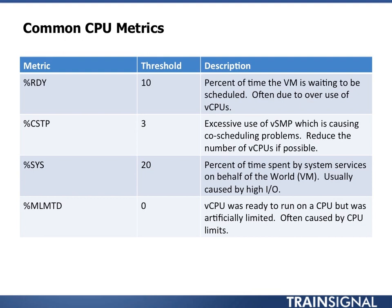The last CPU metric is Percent MLMTD — the vCPU was ready to run but was artificially limited by a CPU limit. I really want to see this at zero. Use CPU limits sparingly, and if you see this above zero, it usually means you've got a limit that someone forgot about. Take a look and dig into that.